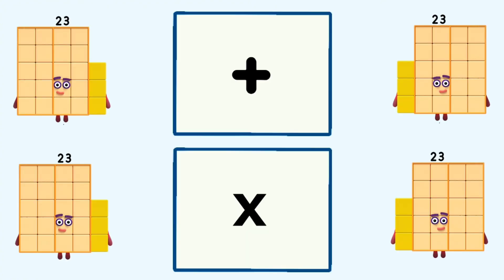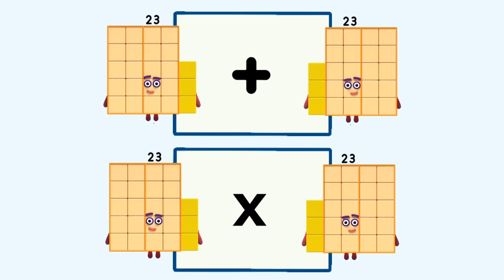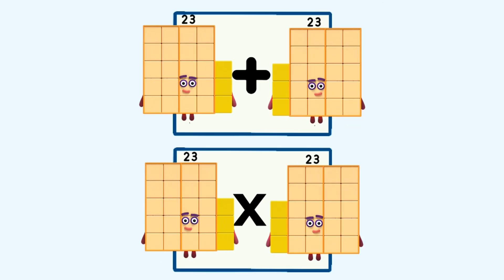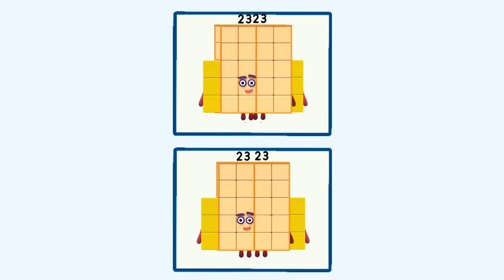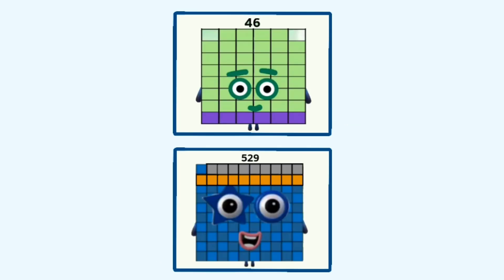23 plus 23 and 23 times 23 equals 46 and 529.